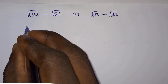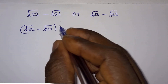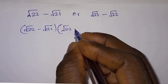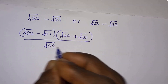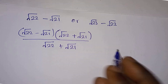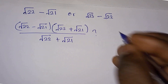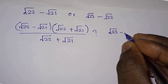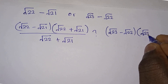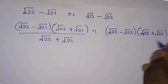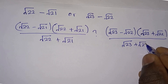We will have √22 minus √21 times its conjugate, which is √22 plus √21, divided by √22 plus √21. I'll put a question mark because as it stands now I can't tell which one is greater. Then we do the same thing: √23 minus √22 times its conjugate, which is √23 plus √22, divided by √23 plus √22.